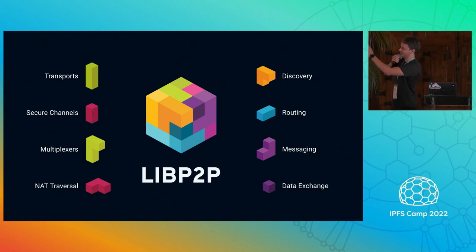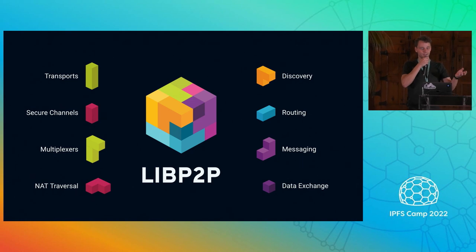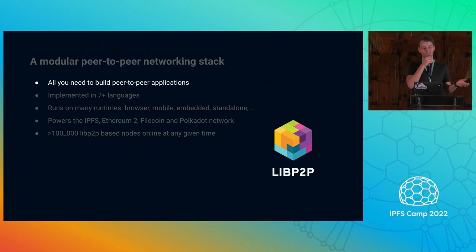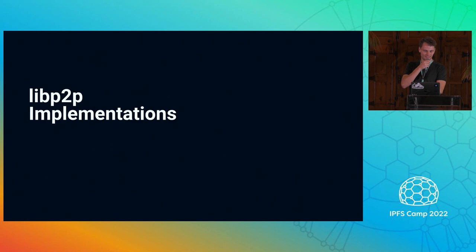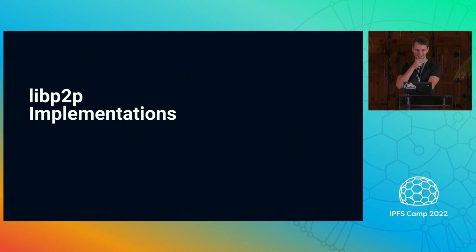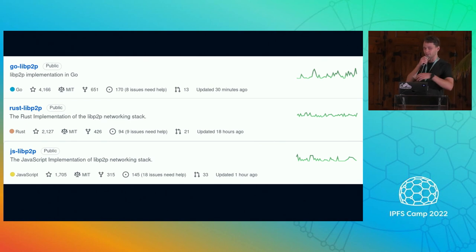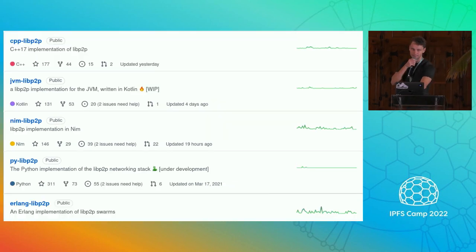As you can see, we have the point-to-point connectivity and the building blocks on top of it. This is really all you need to build peer-to-peer applications. There is one specification of libp2p and many implementations — for example, go-libp2p, Rust libp2p, JS libp2p, and many more out there. We'll also have a talk by Tanguy on Nim libp2p, which is very exciting.